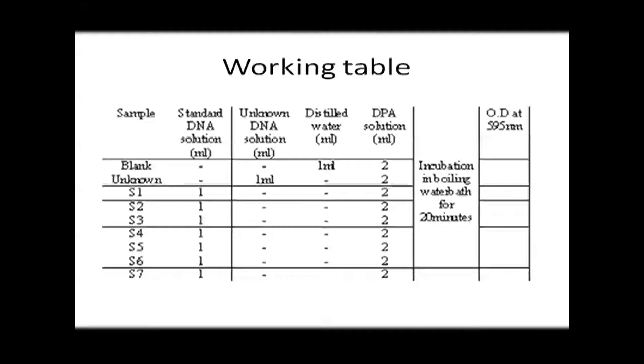Following the working table: 1 mL of standard DNA is taken and mixed with 2 mL of DPA solution. In case of unknown DNA, 1 mL of unknown DNA is mixed with 2 mL of DPA solution. For the blank, 1 mL of water is added instead of DNA to make the reagent blank, which eliminates background noise.